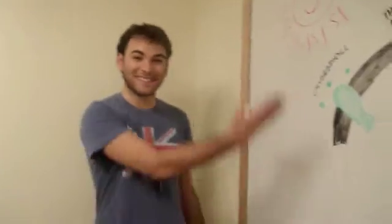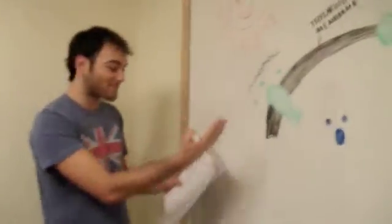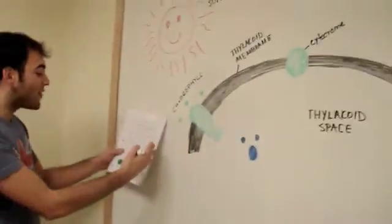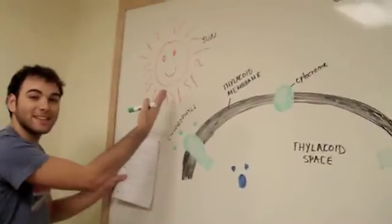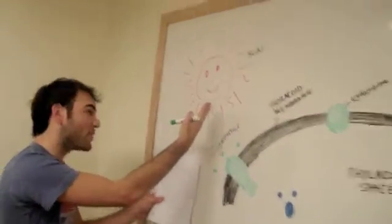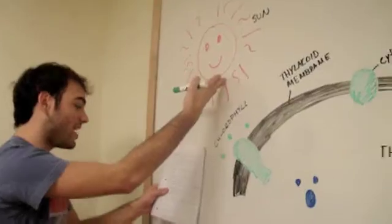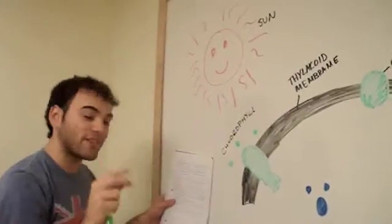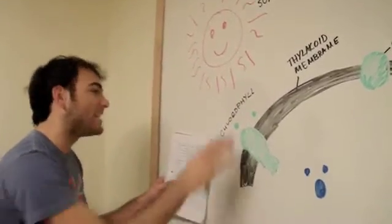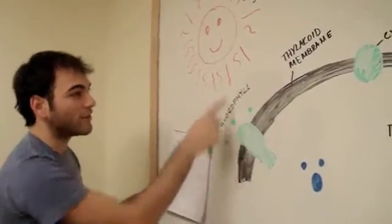Hello. Today we are going to be going through the process of photosynthesis. This process starts with a photon of light at a specific wavelength, and it hits the chlorophyll.